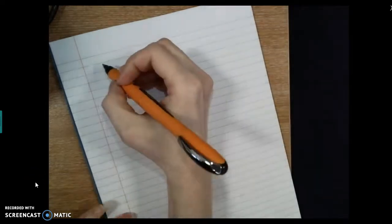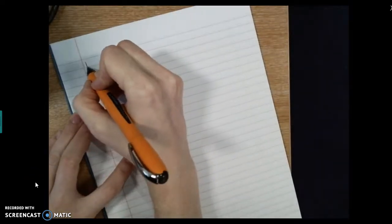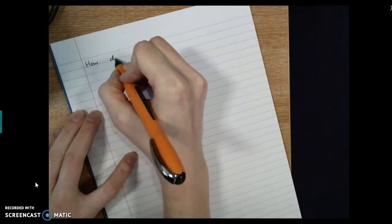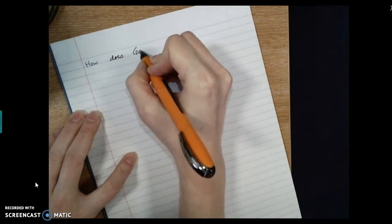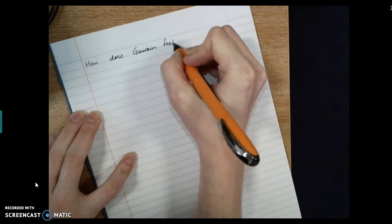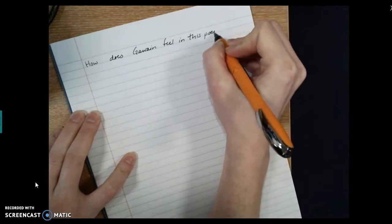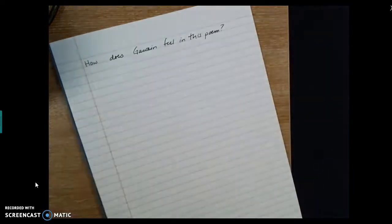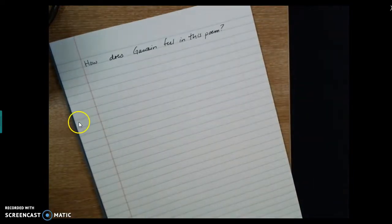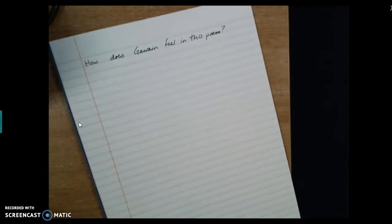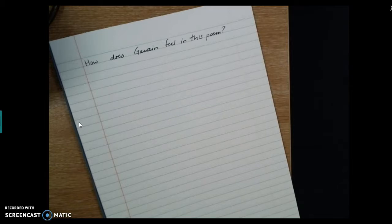Okay, so now it's time to get set up for our paragraph. So let's assume the question is, how does Gawain feel in this poem? First of all, there's some very important words in this question that give you an instruction. What is an instruction in this question that you need to pay very close attention to, to make sure you do the right thing? Gayathri? Yes, why is that important?